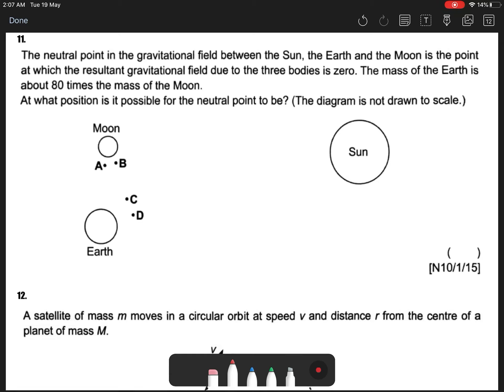The neutral point of the gravitational field between the sun, earth, and moon is the point at which the resultant gravitational field due to the three bodies is zero. The mass of the earth is 80 times the mass of the moon. At which position is it possible for the neutral point to be?